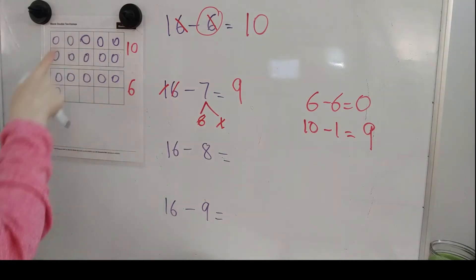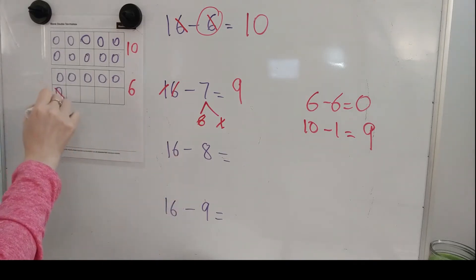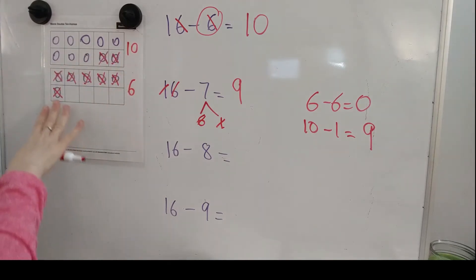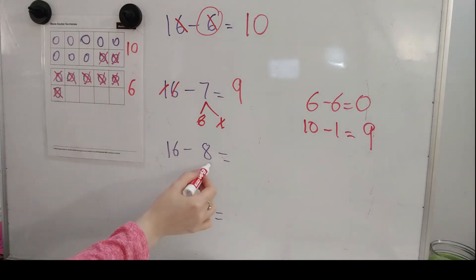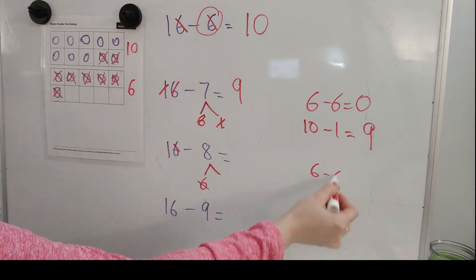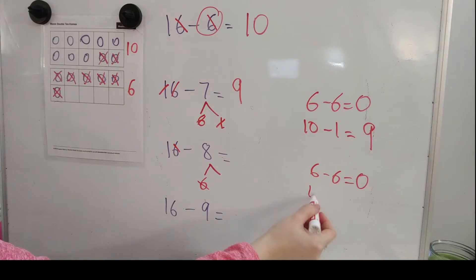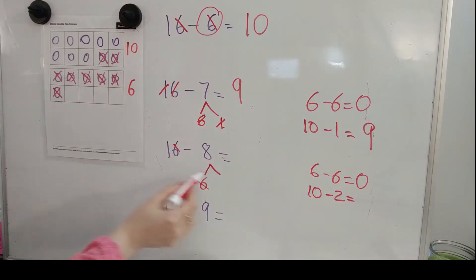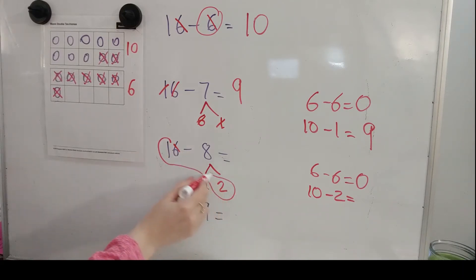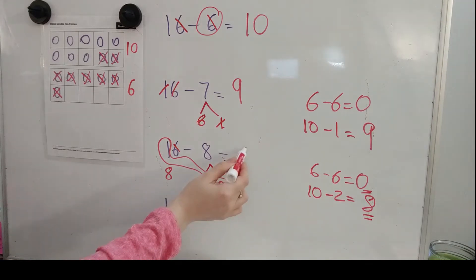We have 16 again on our 10's frame, and we're going to take away the number 8. Again, we're going to start from the 1's place. 1, 2, 3, 4, 5, 6, 7, 8. I can see I took 6 from the 1's place. 6 minus 6 equals 0. And then from the 10, I took away a 2. 6 plus 2 is 8. Take away the 2 from the 10. 10 minus 2 is 8. If you add those leftovers, 8 plus 0 is 8.